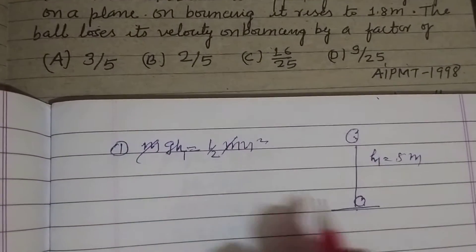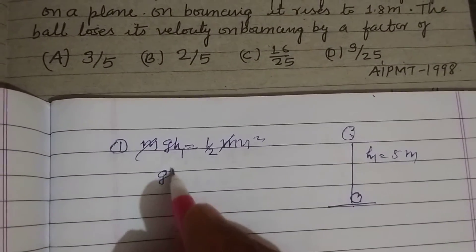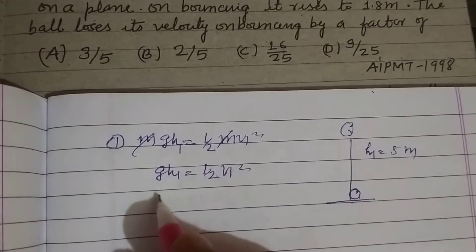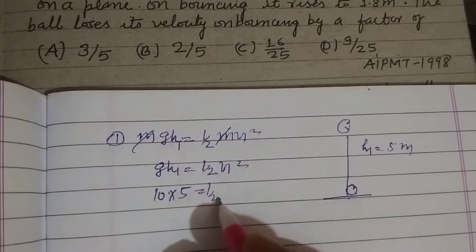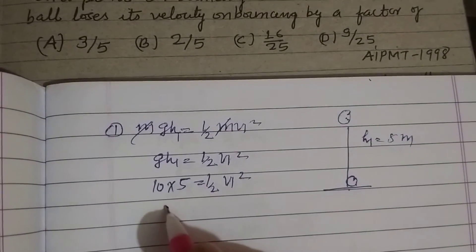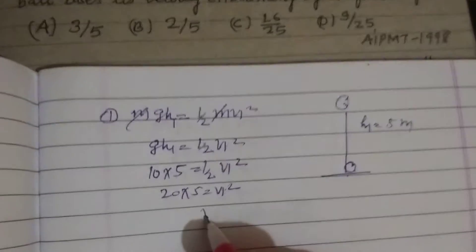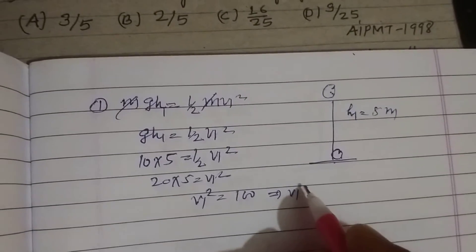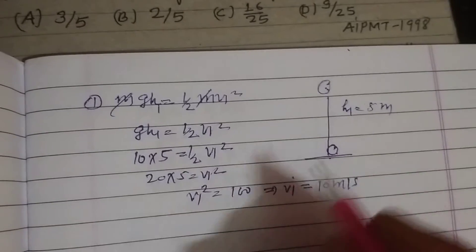Velocity before striking: mgh1 equals half mv1 squared. With g equals 10 and h equals 5, we get 2 × 10 × 5 equals v1 squared, so v1 squared equals 100. Therefore v1 equals 10 meters per second before striking.